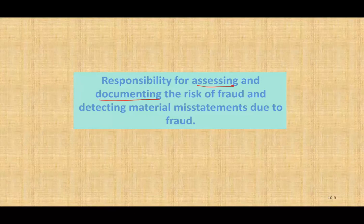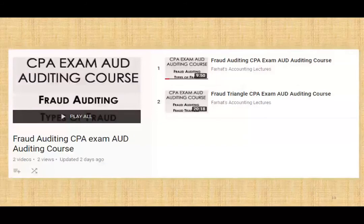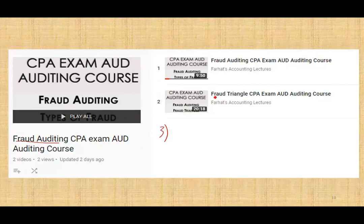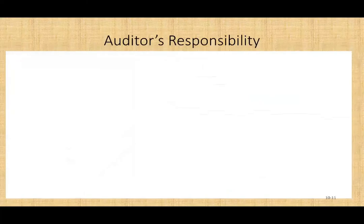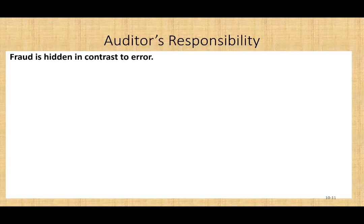So what is the auditor's responsibility when it comes to fraud? Before we proceed any further, I just want to let you know that this series is part of fraud auditing — this will be the third section. We look at the fraud triangle in a prior session, and fraud auditing in general in part one. Now, the first thing we want to understand is, as we mentioned in the prior session, fraud is different than error. Fraud is hidden. In contrast to error, it's an intentional concealment, so it's going to be a little bit harder for the auditor to catch the fraud.